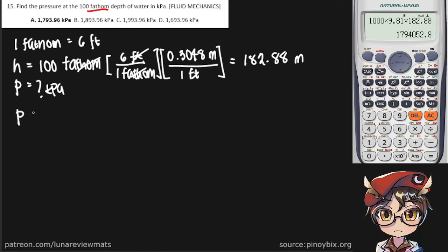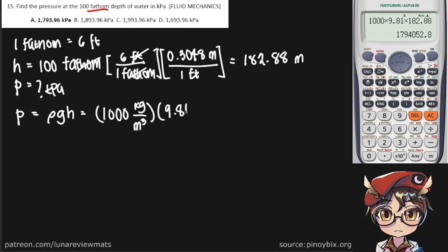Now, if you remember, the pressure at a certain depth is given by the density of a substance, multiplied by the gravitational acceleration, and multiplied by the depth. We can simply start putting our values in. We know that water has a density of 1000 kilograms per cubic meter. Gravitational acceleration is 9.81, and our depth is 182.88 meters.